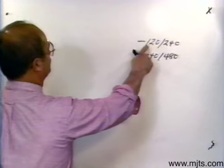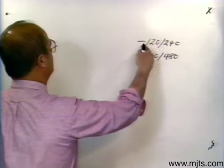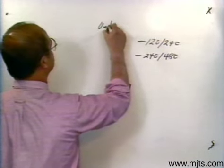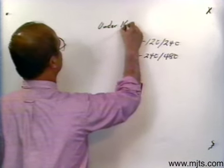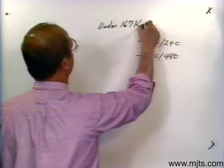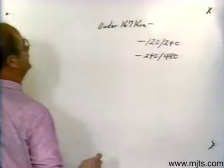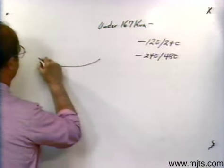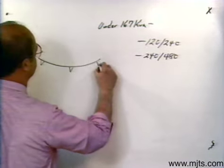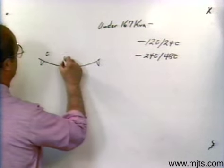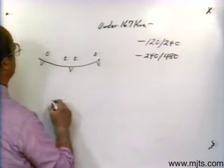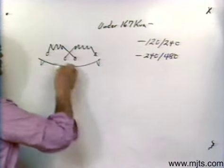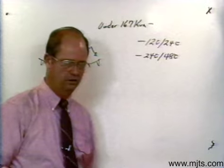If I have a transformer rated under 167 kVA, that transformer on the low side would have three bushings. It would have internal connections and the possibility of being either series or parallel connected.